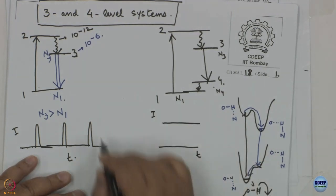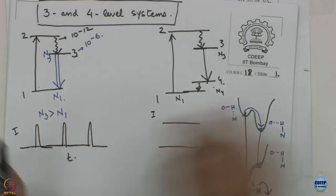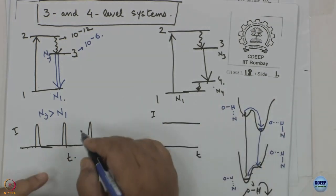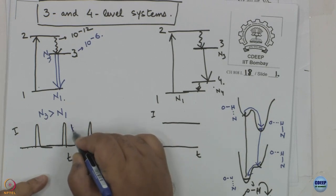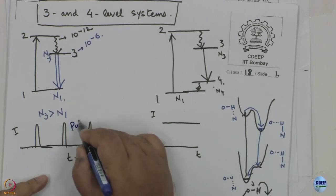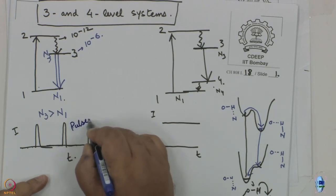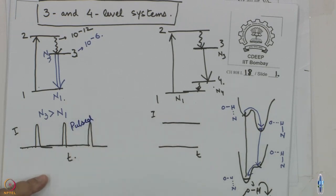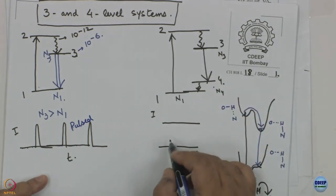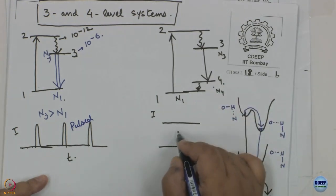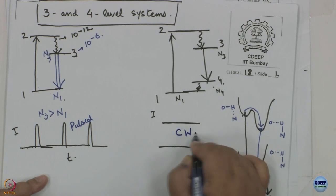So the first case — the three-level system — is an example of an intrinsically pulsed laser, while this four-level system is an example of an intrinsically continuous-wave laser.